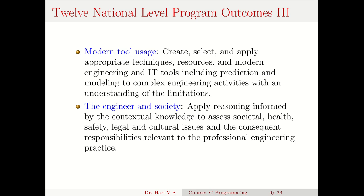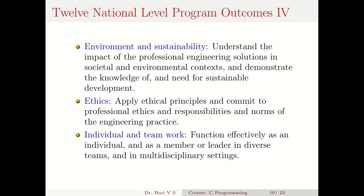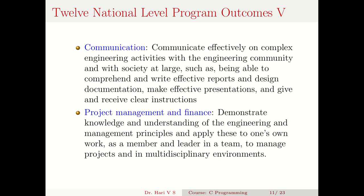The sixth outcome is engineer and society — an engineer is basically solving the problems of society or making society more comfortable with new resources and new systems. The seventh is environment and sustainability — to understand the impact of professional engineering solutions in societal and environmental context and demonstrate the knowledge of and need for sustainable development. The eighth is ethics — apply ethical principles and commit to professional ethics, responsibilities, and norms of engineering practice. The ninth is individual and teamwork — function effectively as an individual or as a member or leader in diverse and multidisciplinary teams.